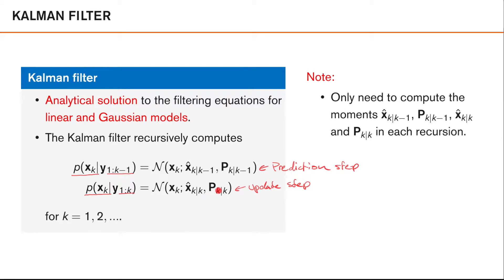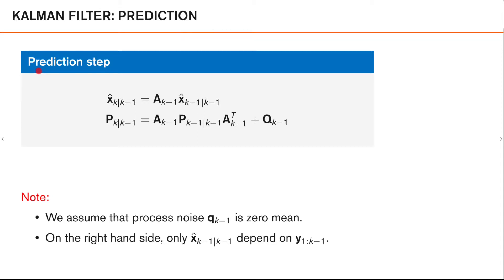Now we're going to look at how the Kalman filter calculates these means and covariances. We start by looking at the prediction step and how to calculate the mean and covariance of the predicted density. If you remember from a previous lecture where we looked at linear transformations of Gaussian random variables, you will probably recognize these expressions. Recall the linear Gaussian process model, where x_k is equal to A_{k-1} times x_{k-1} plus some process noise q_{k-1}.